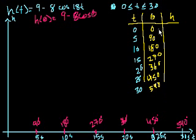So when t equals 0, theta equals 0, cosine of 0 is 1, so 9 minus 8 is 1. Cosine of 90 degrees is 0, so 9 minus 0 is 9. Cosine of 180 degrees is minus 1, so minus 1 times minus 8 is plus 8, so 9 plus 8, that's 15.